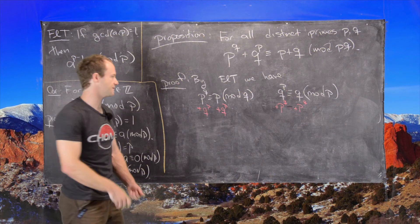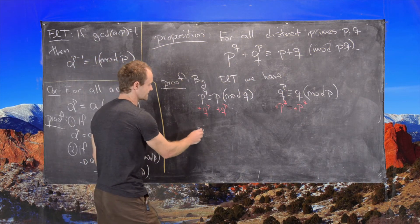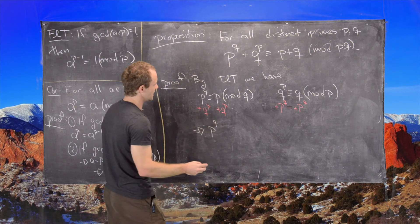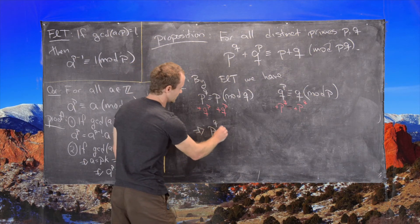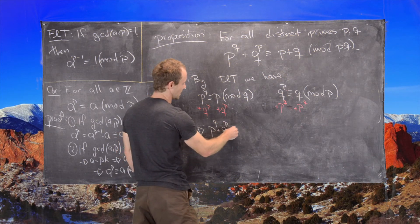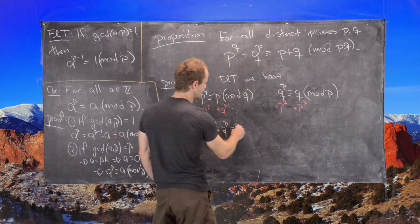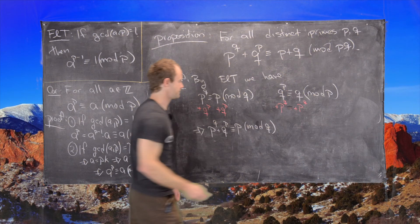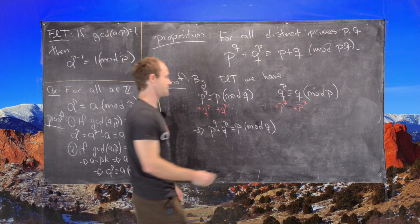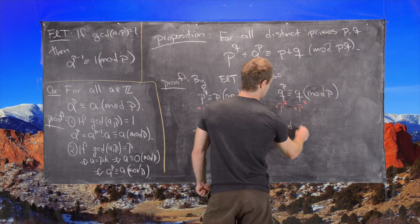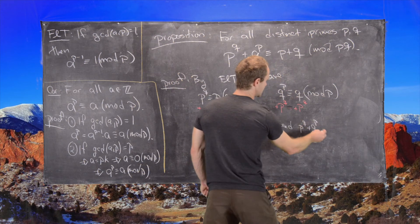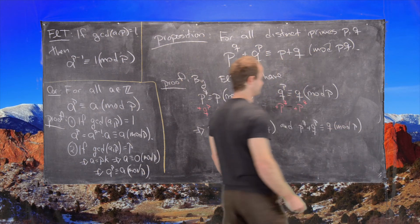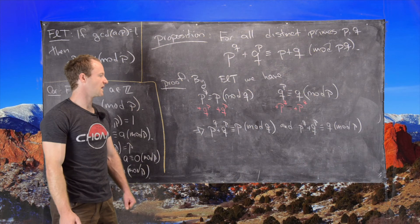So what that gives us is P to the Q plus Q to the P is congruent to P mod Q. And P to the Q plus Q to the P is congruent to Q mod P.